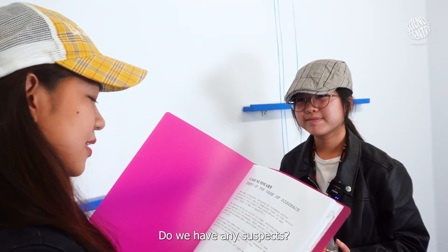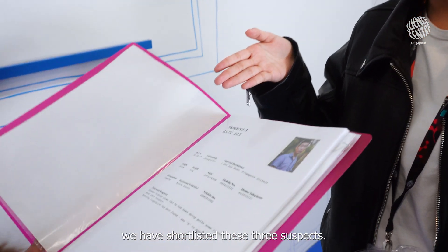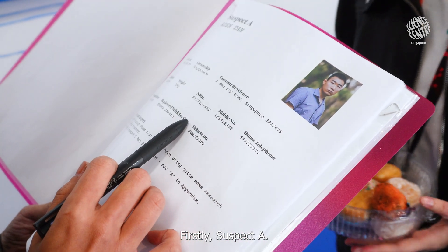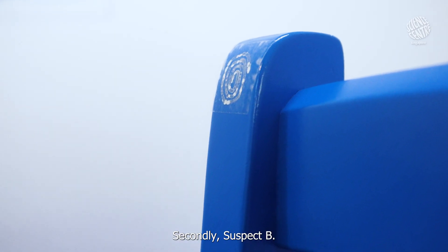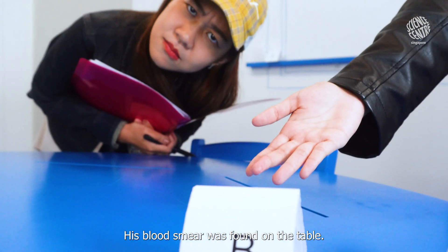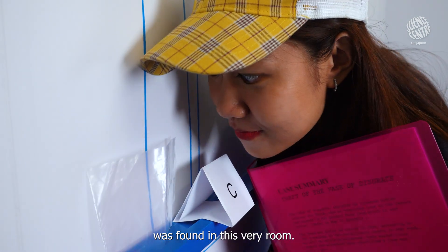Do we have any suspects? As a matter of fact, we do. Based on the evidence collected, we have shortlisted these three suspects. Firstly, Suspect A. His fingerprint was found on the chair rack here. Secondly, Suspect B. His blood smear was found on the table. And finally, a strand of hair belonging to Suspect C was found in this very room.